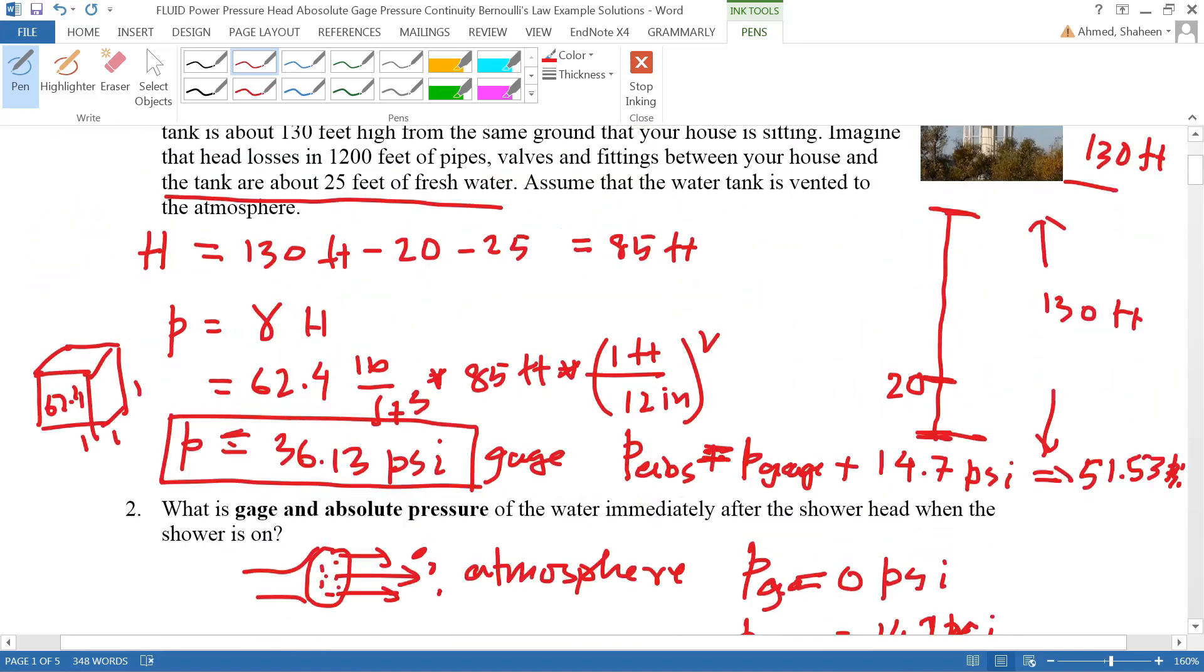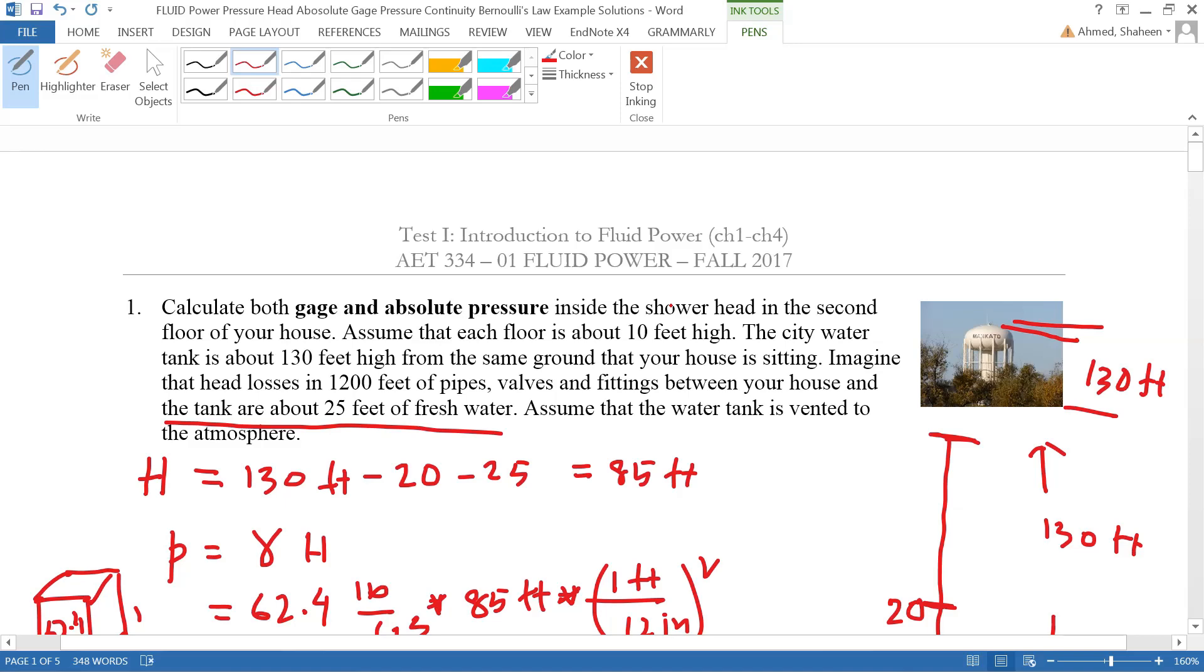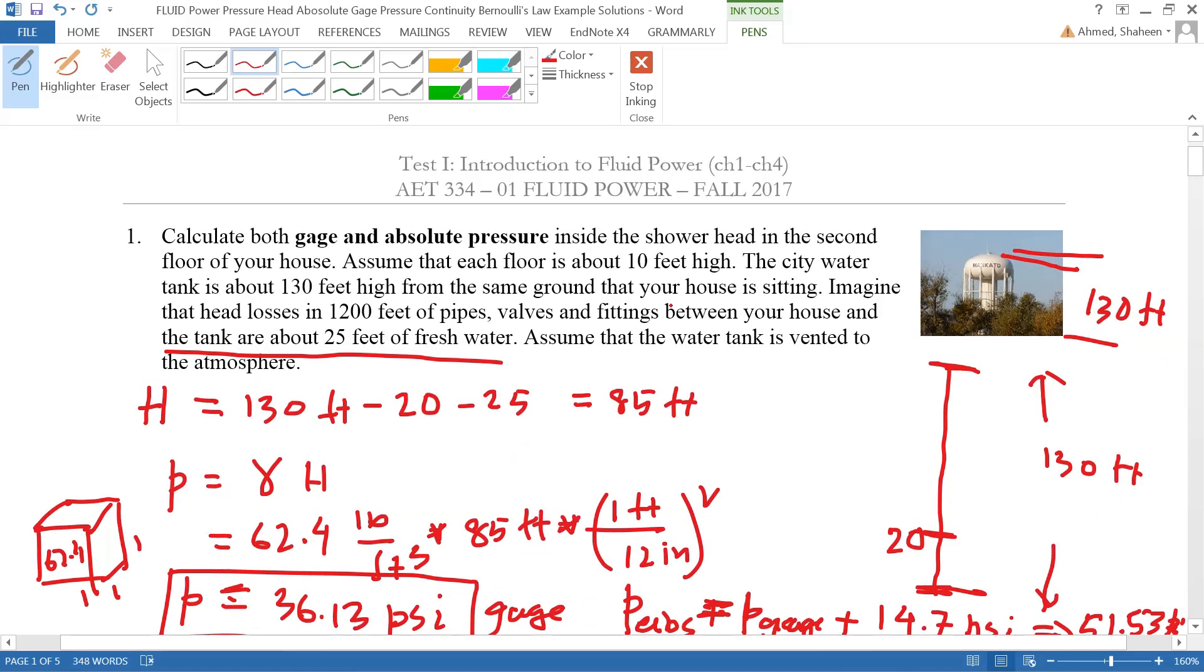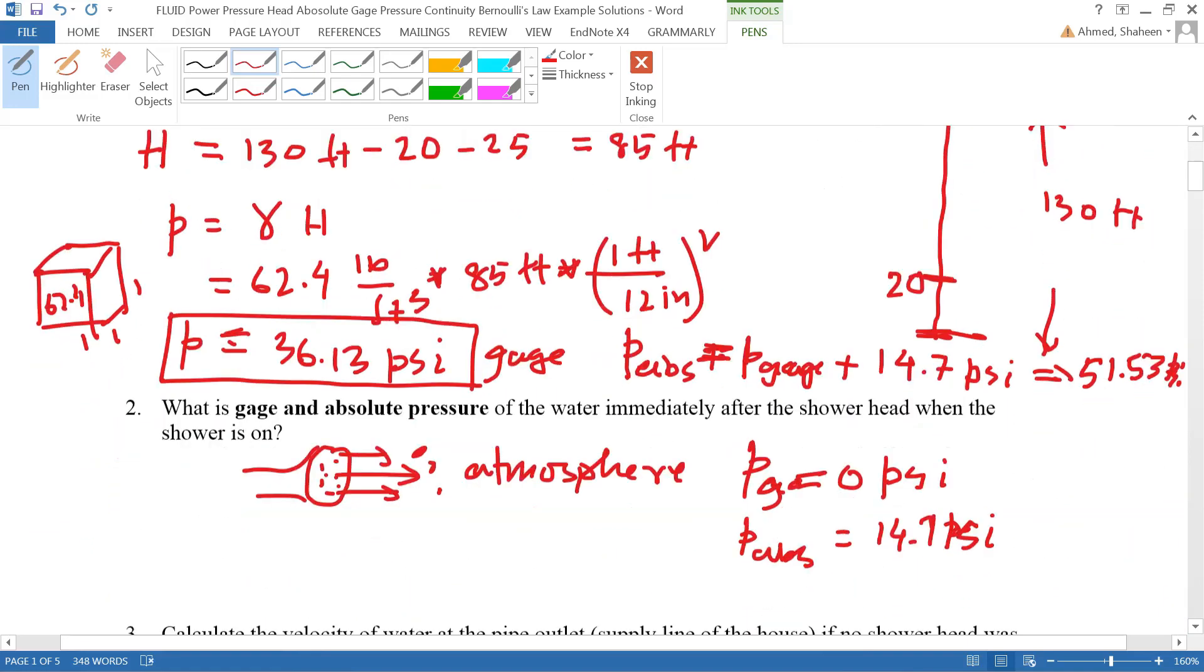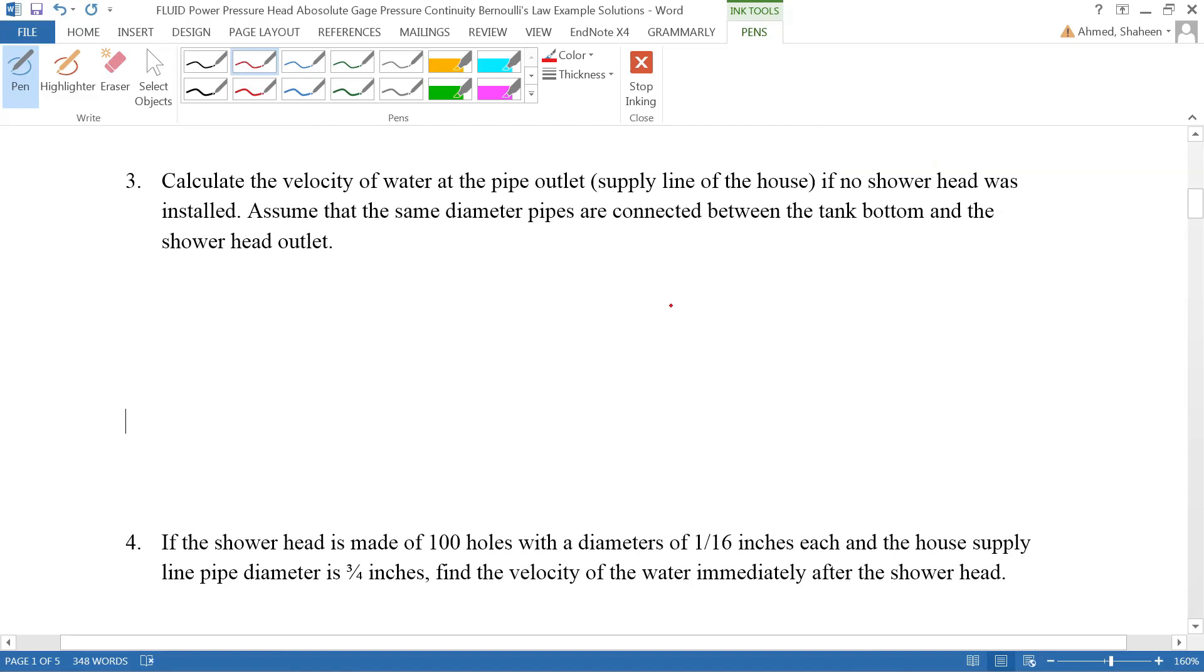So basically you have this 130 feet high water tank, 25 feet of loss between the water tank and the house, and then it's two-story high and the shower head is at 20 feet high. So the total head available here, in terms of the head, is 85 feet of water. That is what is available.